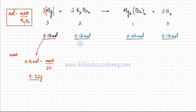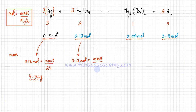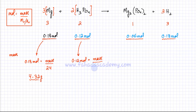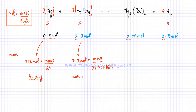For phosphoric acid: 0.12 moles. The MR is only for phosphoric acid — don't mix the ratio of 2 into the MR. Phosphoric acid has 3 hydrogens, 1 phosphorus (31), and 4 oxygens (16 × 4). So MR = 3 + 31 + 64 = 98. Mass = 0.12 × 98 = 11.76 grams.